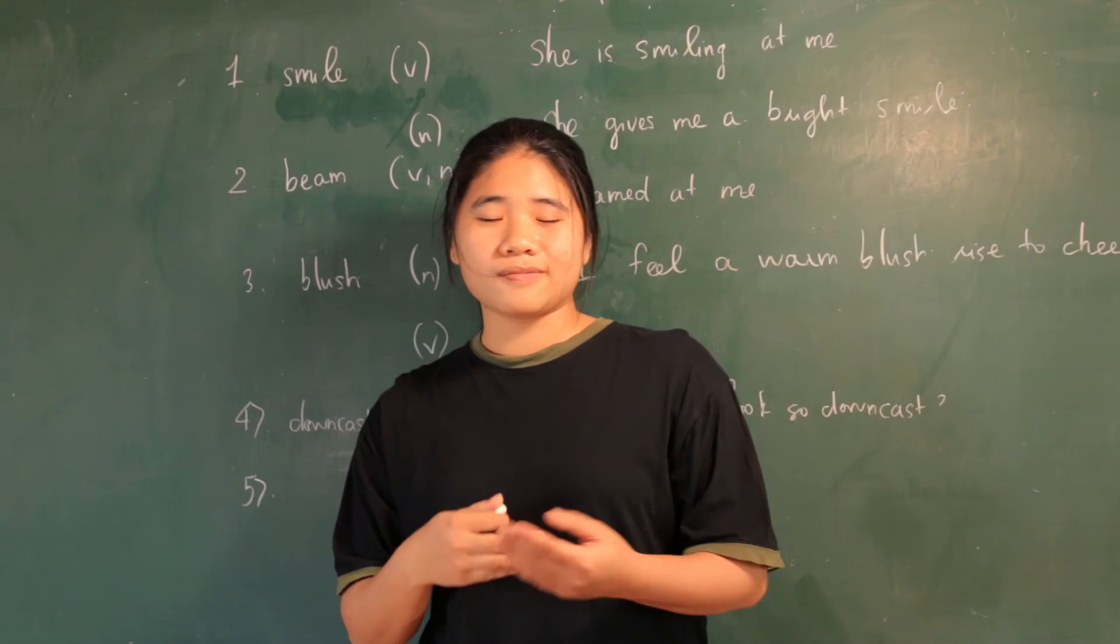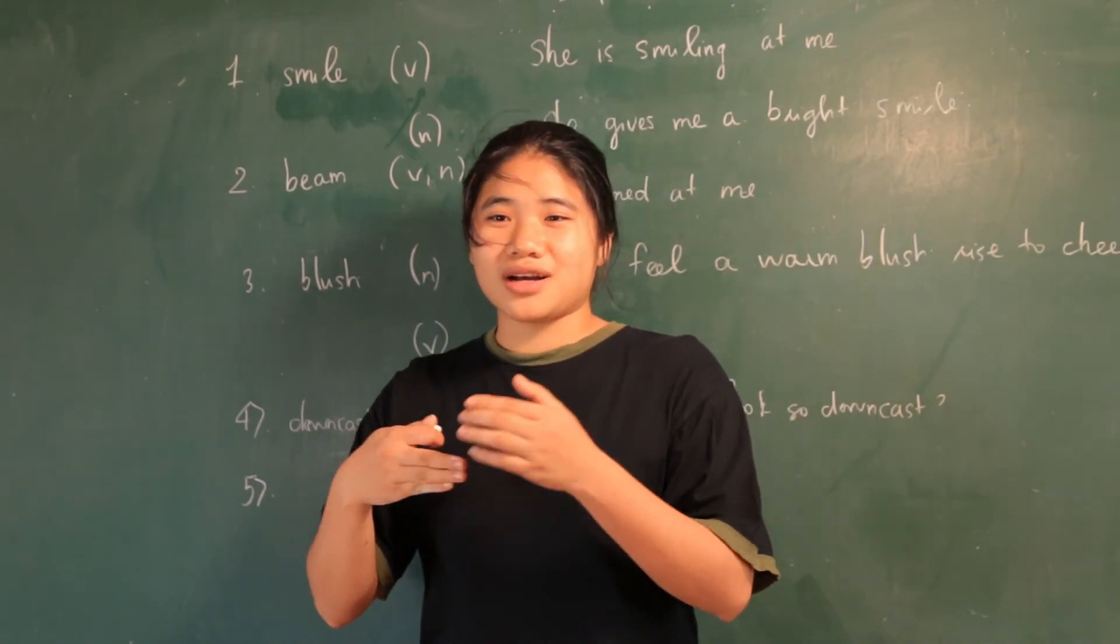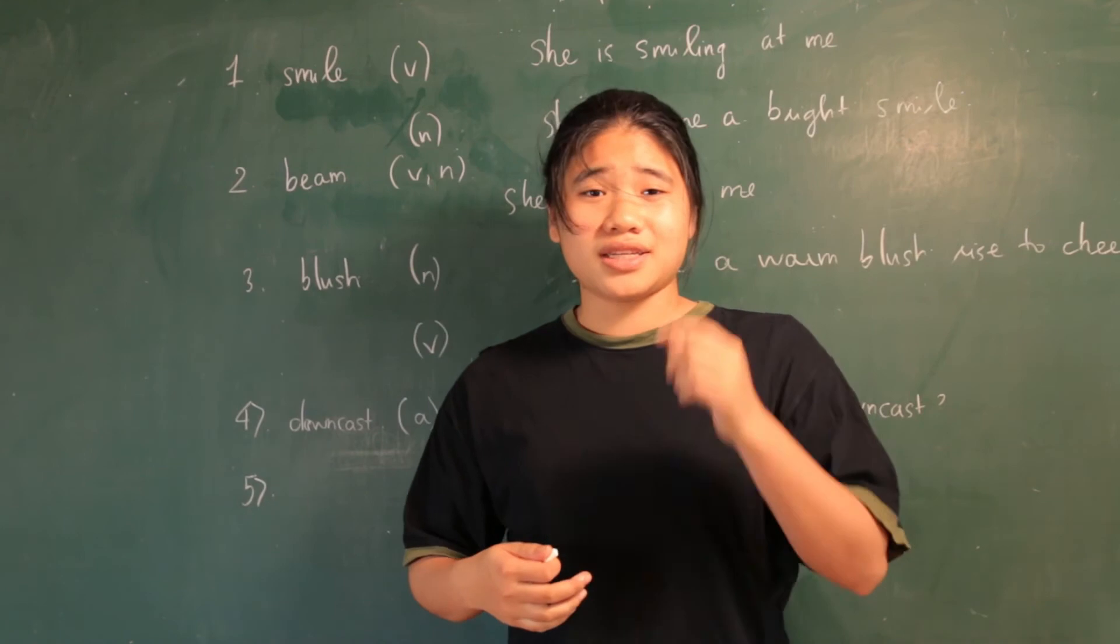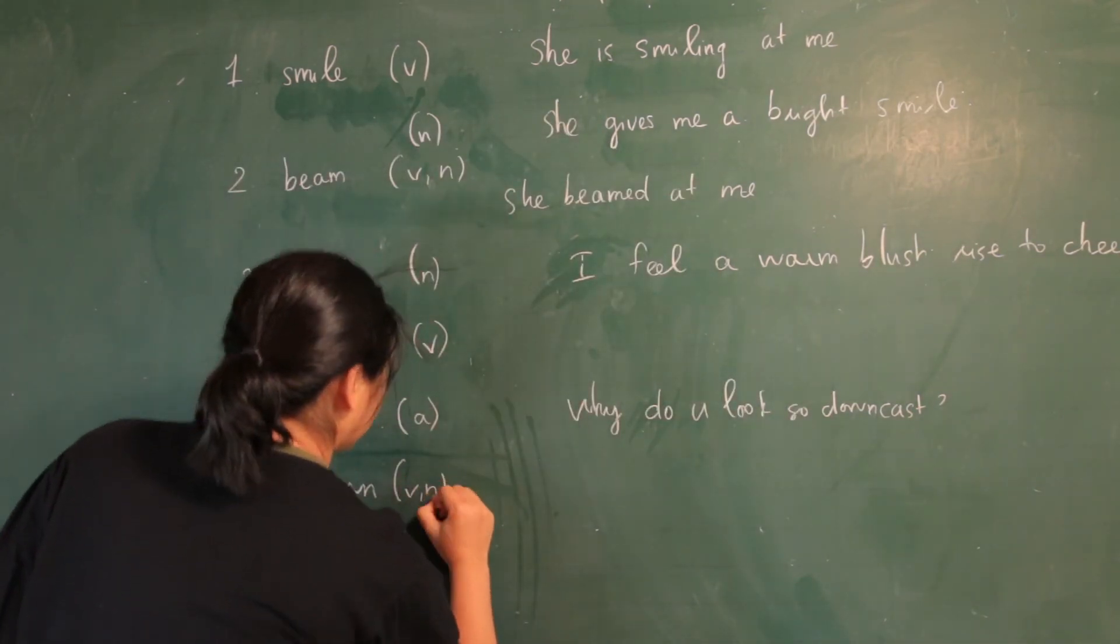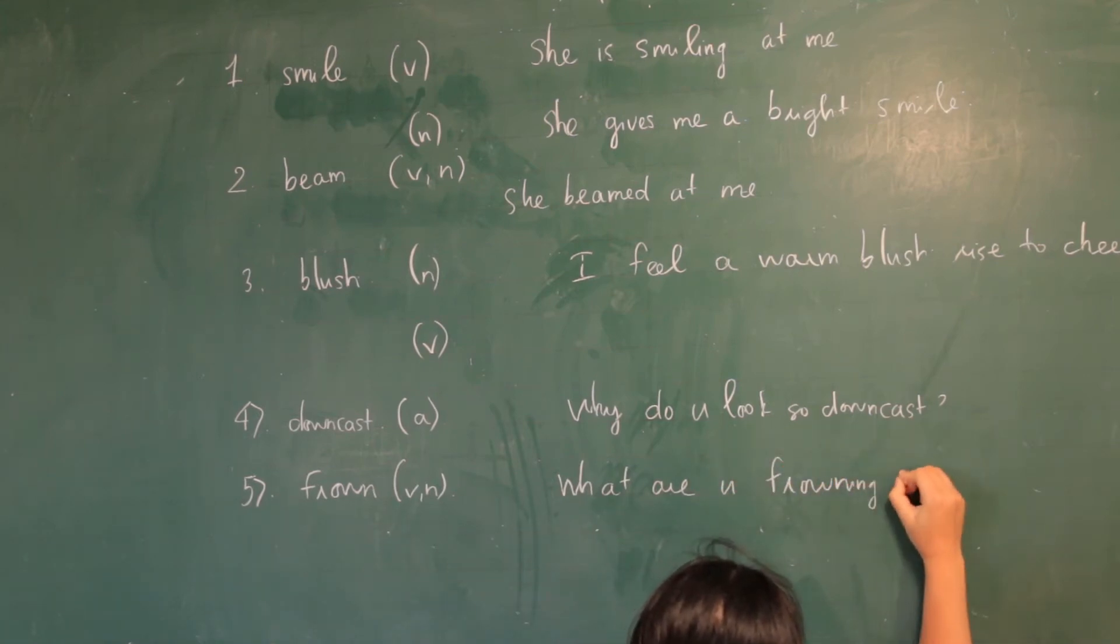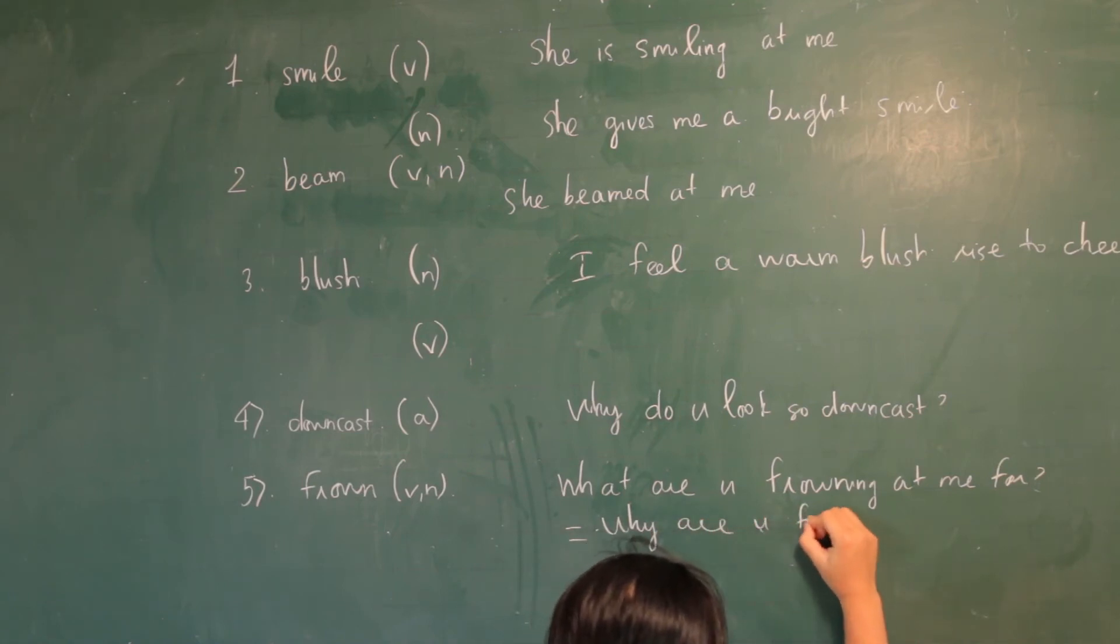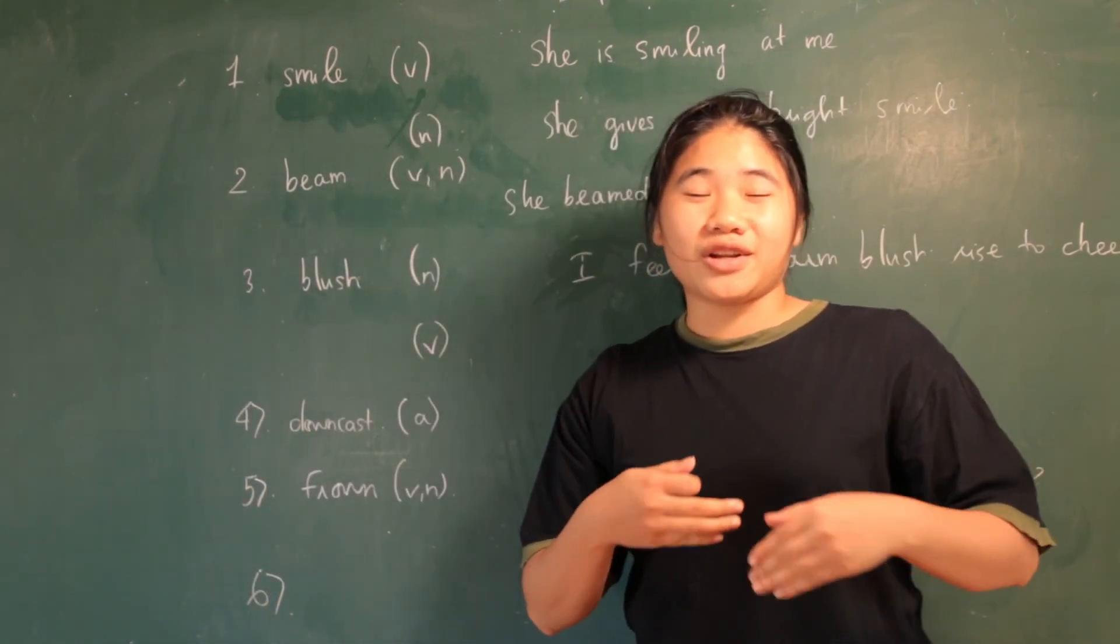And when you are serious, when you are angry, when you are worried, you bring two eyebrows closer together, and the lines appear on your face like this, it's frown. Frown is a verb and noun. And for example, what are you frowning at me for? It means, why are you frowning at me?